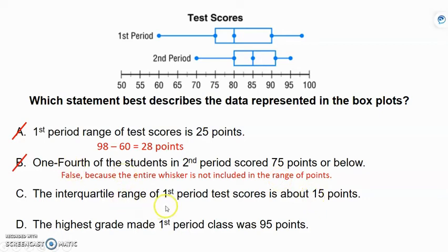The interquartile range of first period test scores is about 15 points. Okay, let's go to first period interquartile range. So interquartile range, remember, is the length of the box. So we're in first period. So the box ends at about 90, and the box starts at about 75. So if I subtract those two, I get about 15 points. So I think this is the correct answer.